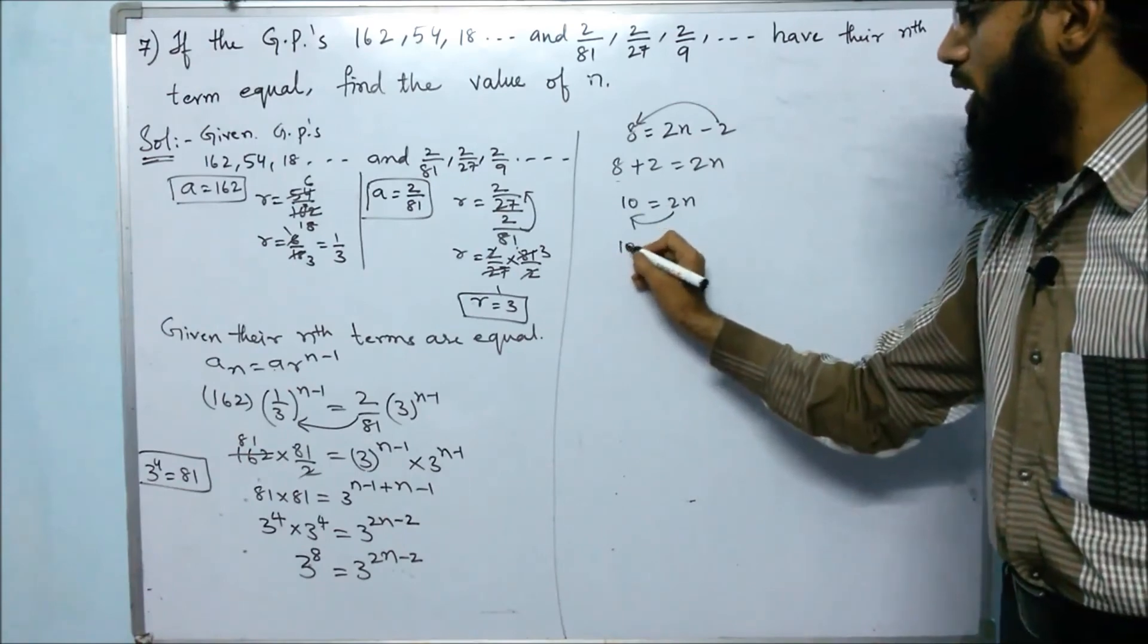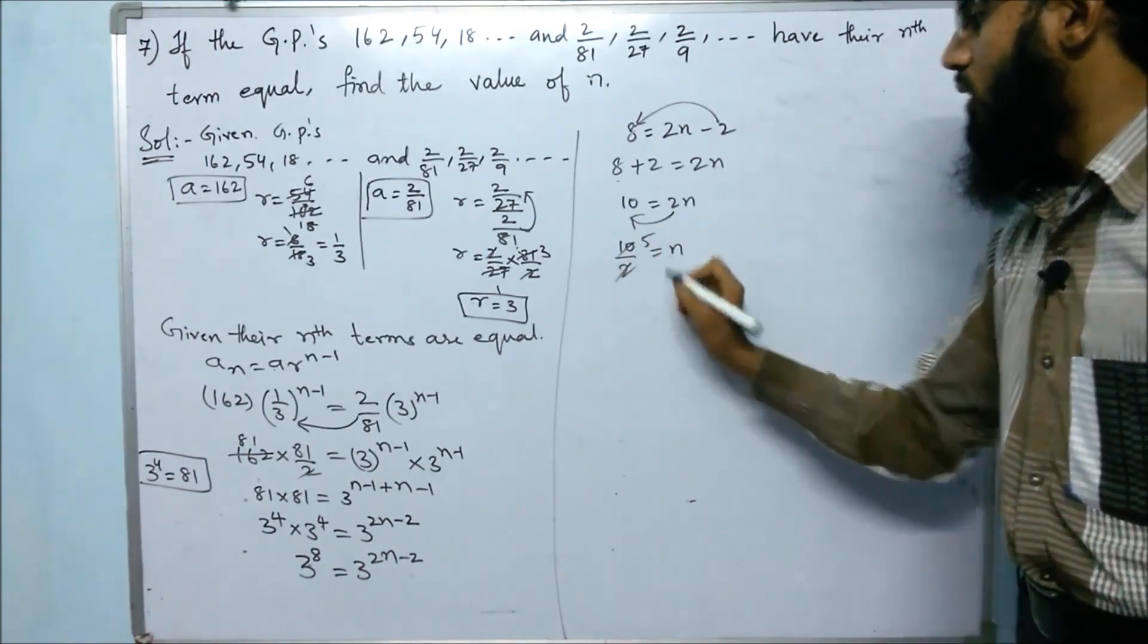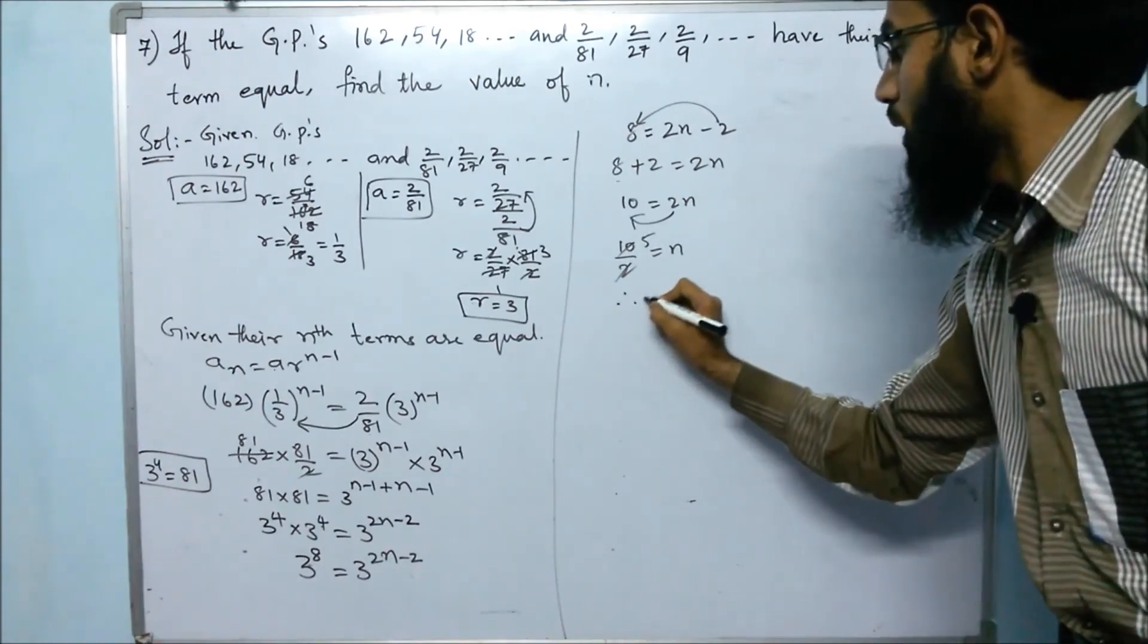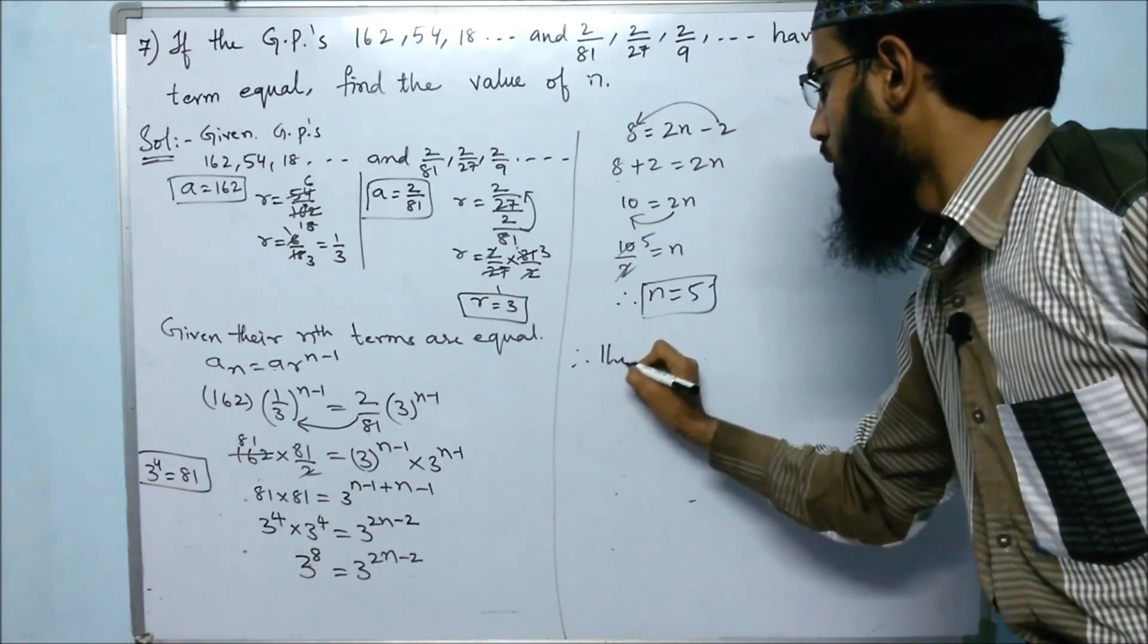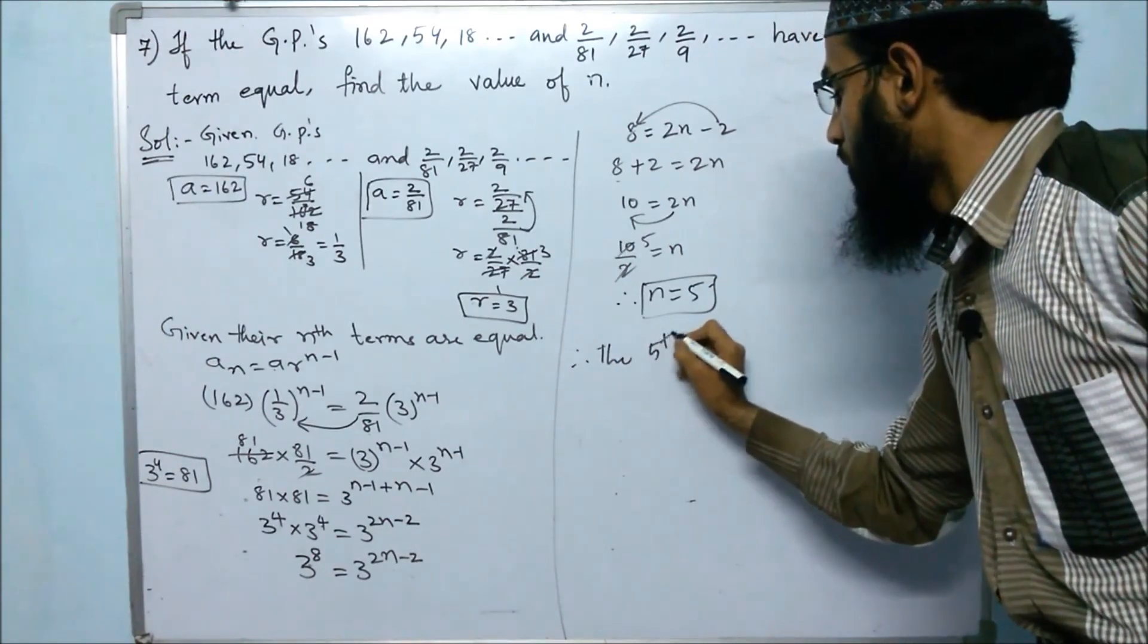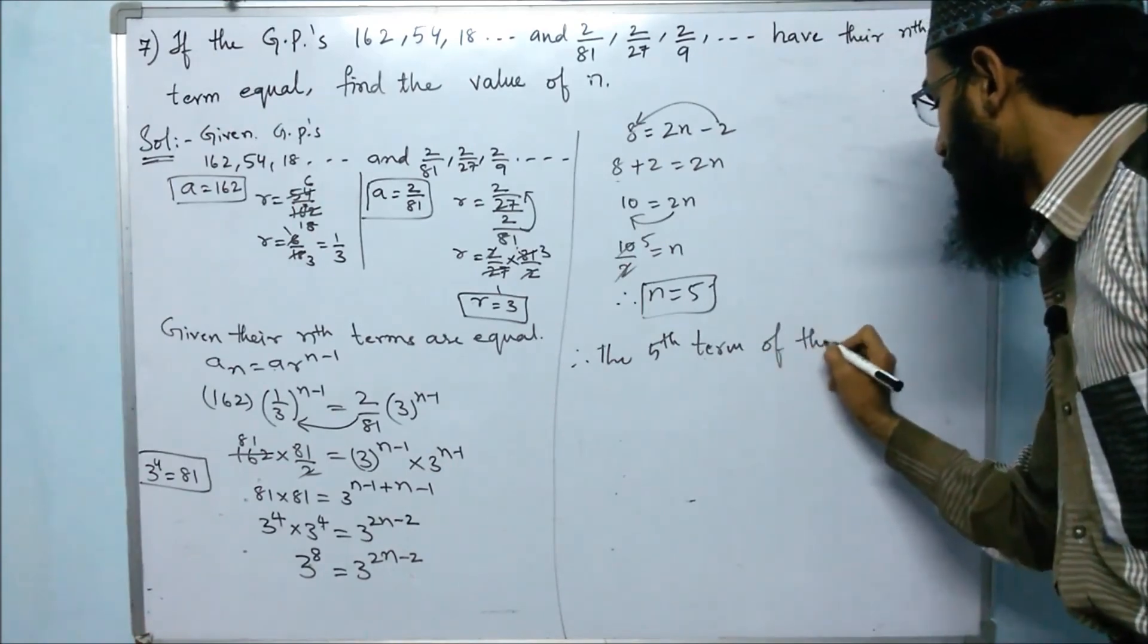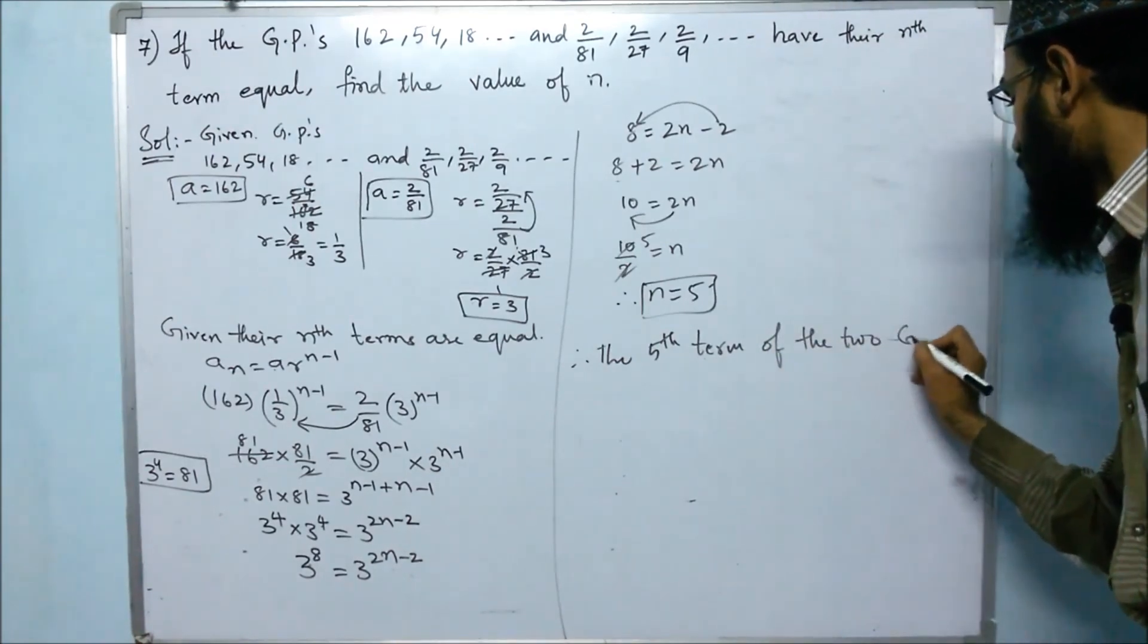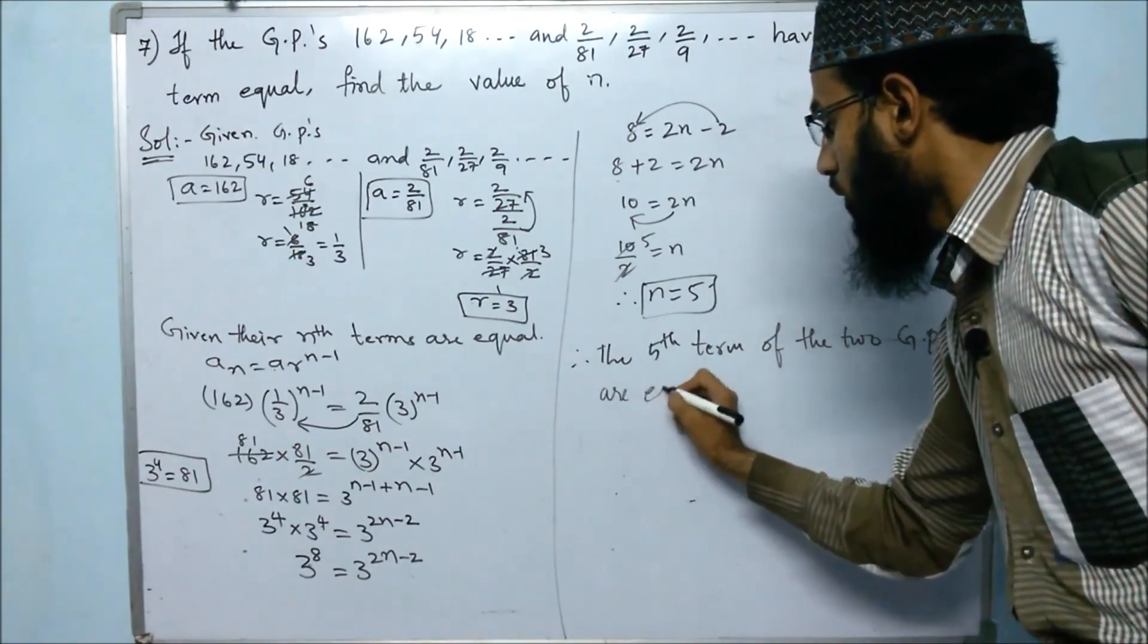Dividing by 2: n equals 10 divided by 2 equals 5. Therefore n = 5, meaning the fifth term of the two GPs are equal.